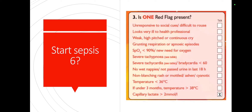Most sepsis pathways ask: is one of the red flags present? The red flags include: child not responding to social cues, looking very ill to a healthcare professional, weak high-pitched or continuous cry, grunting, oxygen saturations less than 90% or needing oxygen, severe tachypnea, severe tachycardia or bradycardia, no wet nappies or no urine for the last 18 hours, non-blanching rash or cyanosis, temperature below 36°C or above 38°C in a child under three months, and capillary lactate above 2. That last one raises the question — how many times has someone squeezed a capillary blood gas and got a falsely high lactate? Would you initiate Sepsis 6 for that?